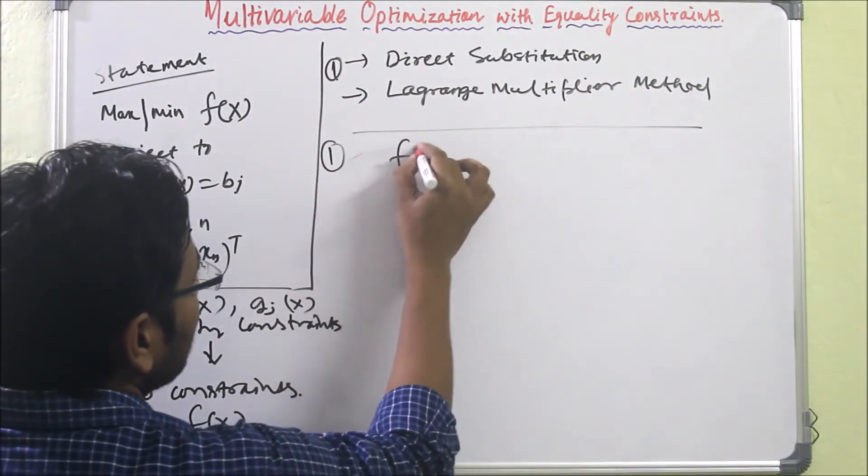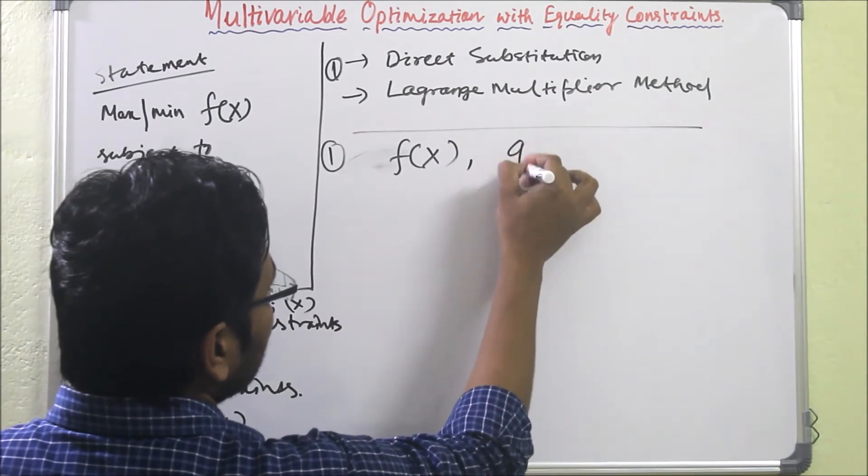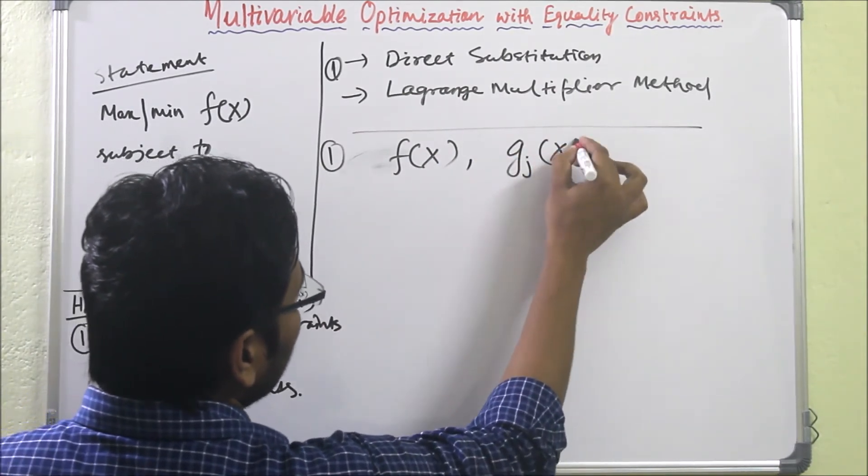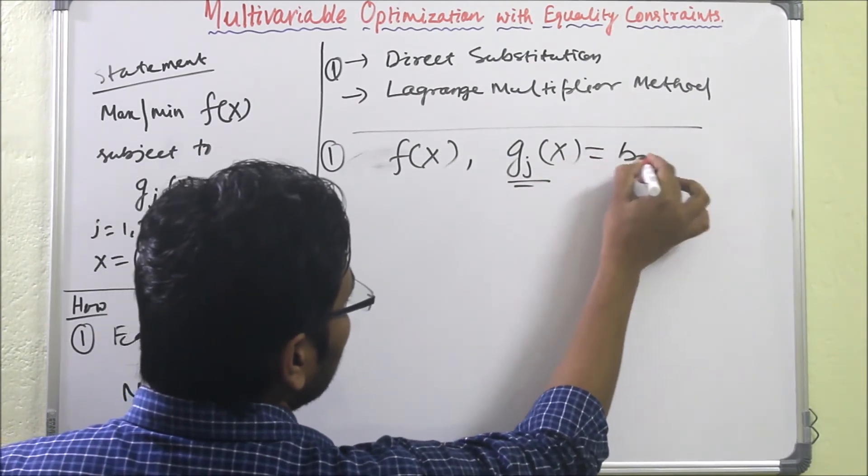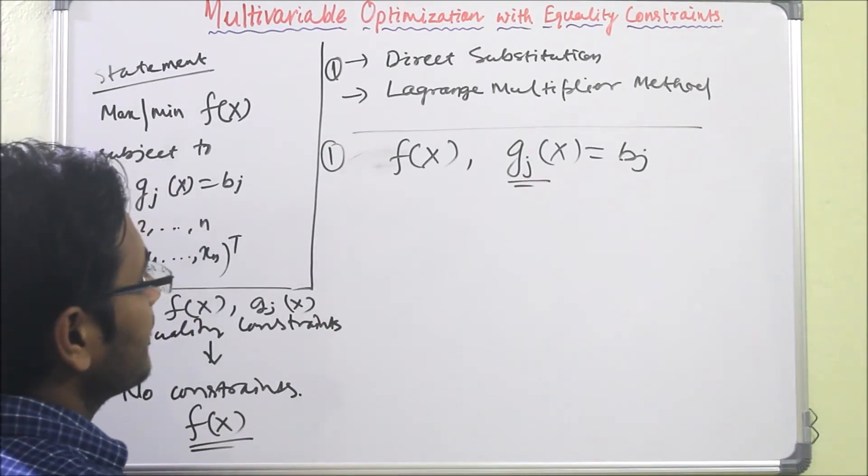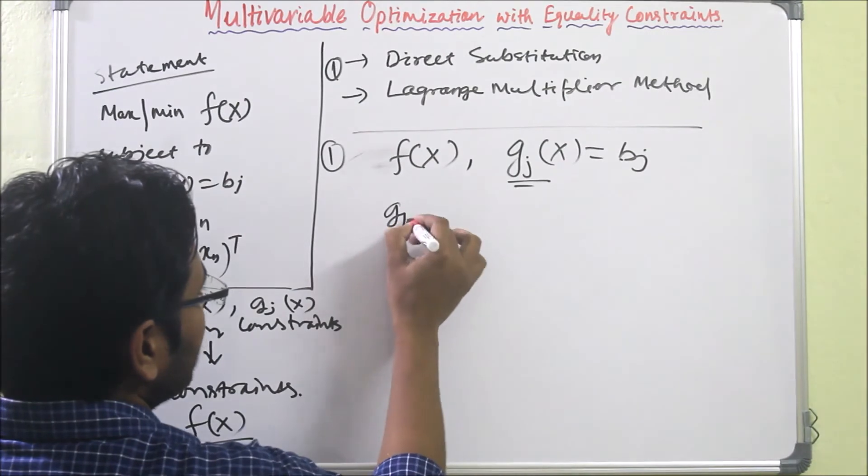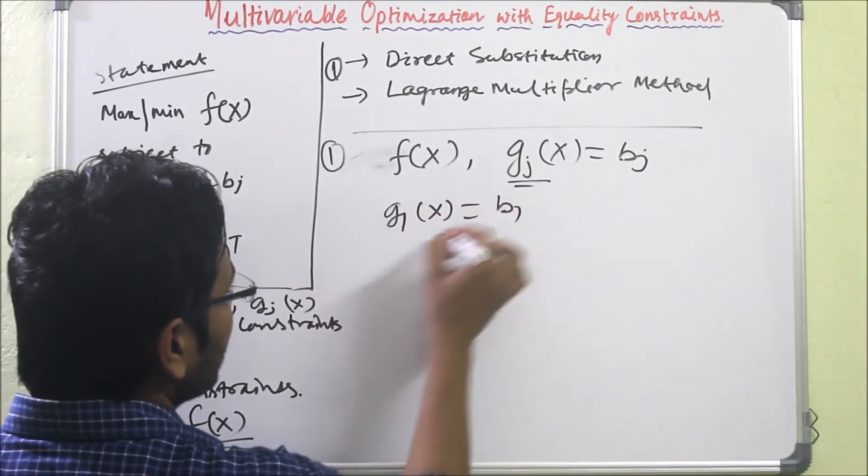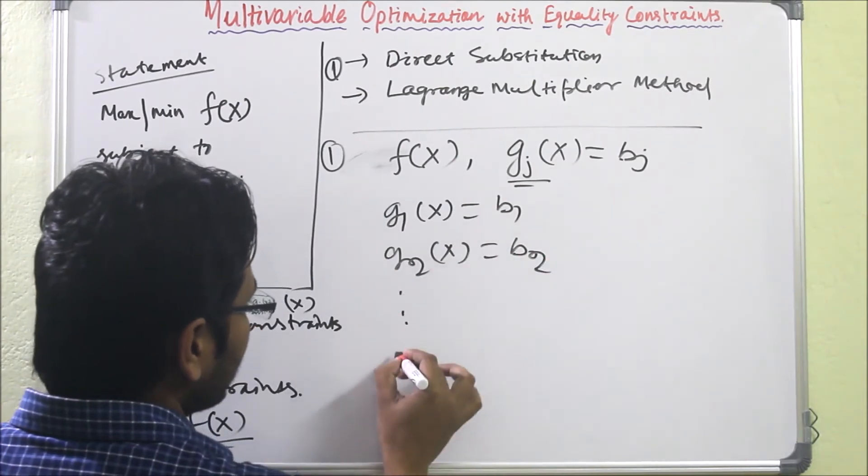The statement is: given f(x) subject to g_j(x) = b_j. What to do? We have to consider these j equations. This means g_1(x) = b_1, g_2(x) = b_2.